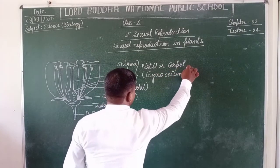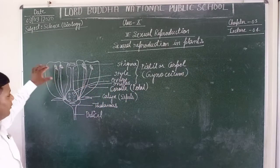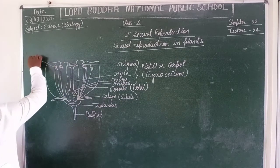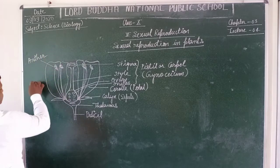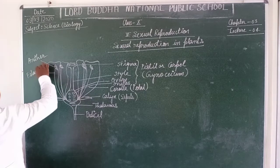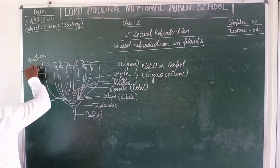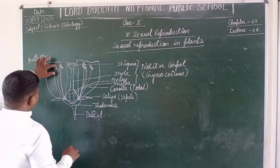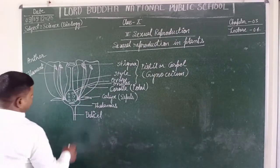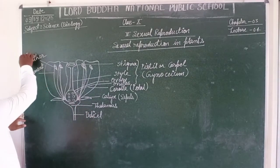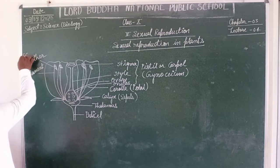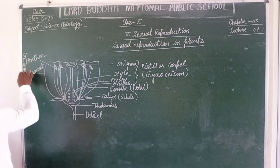This is the anther and the filament. The anther and filament are linked together by connective tissue. The anther and filament collectively are called the stamen, which is the male reproductive part of the flower.